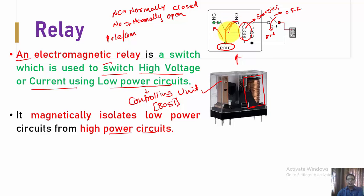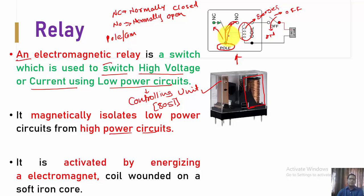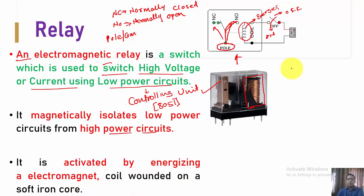Now it has this new connection. In this way, energizing the coil is responsible for the activation of the unit. It is activated by energizing the electromagnet. This coil is termed as the electromagnet — the coil wound on a soft iron core. This structure is the same as what is shown here.